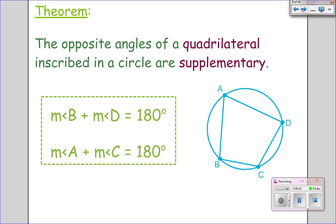Alright, here are some theorems that go with inscribed angles. The opposite angles of a quadrilateral, so let's say I put a quadrilateral inside of a circle. The opposite angles of a quadrilateral inscribed in a circle are supplementary. So angle B plus angle D equals 180. Angle A plus angle C equals 180. That's whenever the quadrilateral is inscribed in the circle.